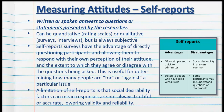Regardless of format, self-reports are always subjective, which means subject to bias. Self-report surveys have the advantage of directly questioning participants and allowing them to respond with their own perception of their attitude and the extent to which they agree or disagree, commonly using scales of one to five, one to seven, or one to ten. This is useful for determining how many people are for or against a particular issue, and rating scales are also really useful in determining the strength of someone's attitude.